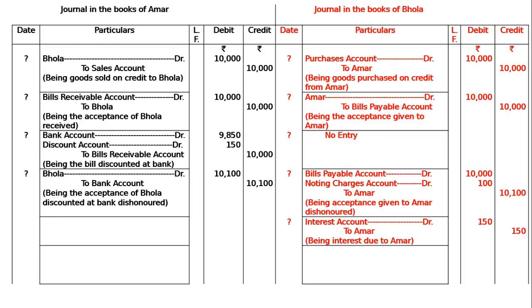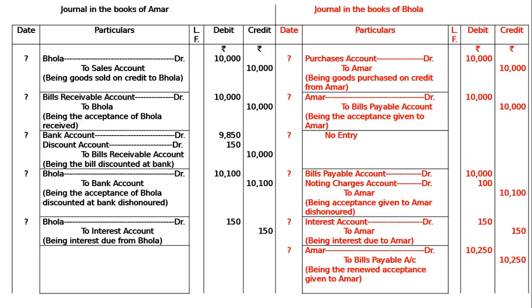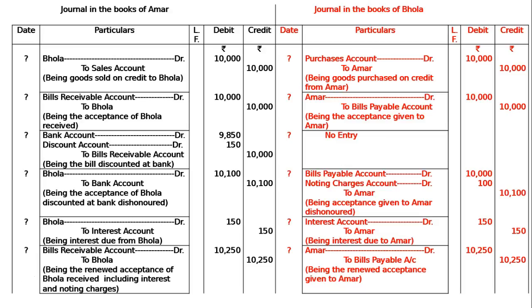In the books of Ammar: Bhola debited to Interest account, being interest due from Bhola. On Rs.10,100, Ammar charges interest on Bhola, so interest is made due. The new bill is drawn at Rs.10,250. In the books of Bhola: Ammar debited to Bills Payable account, being renewed acceptance given — Rs.10,000 bill value, Rs.100 noting charges, Rs.150 interest, totaling Rs.10,250. In the books of Ammar: Bills Receivable account debited to Bhola, being renewed acceptance of Bhola received including interest and noting charges.